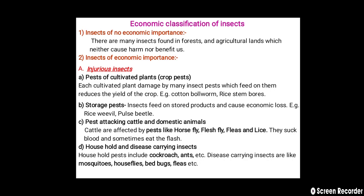The third injurious insects are pests attacking cattle and domestic animals. Cattle are affected by pests like horsefly, flesh fly, fleas, and lice. They suck the blood and sometimes eat the flesh. The next category is household and disease-carrying insects. Household pests include cockroaches and ants. Disease-carrying insects include mosquitoes, housefly, bedbugs, and fleas.